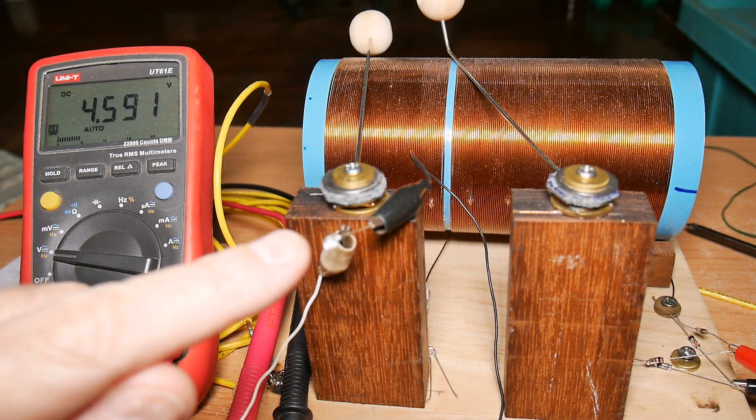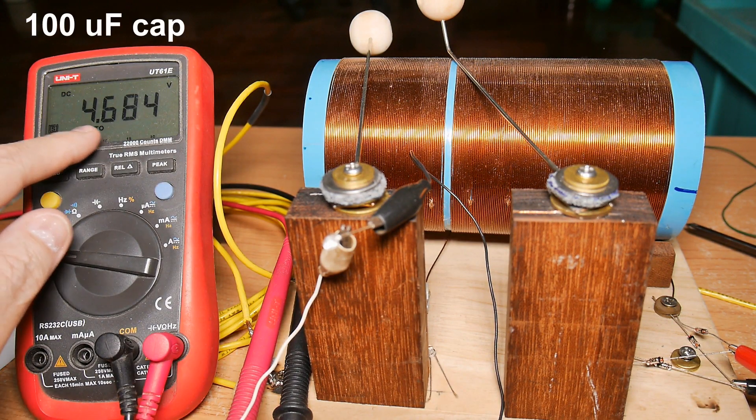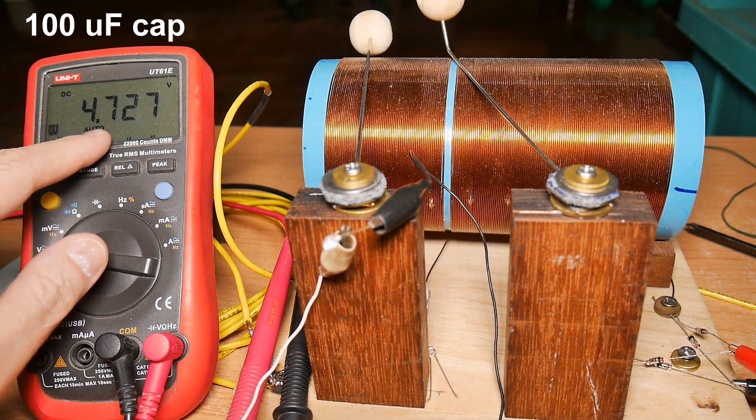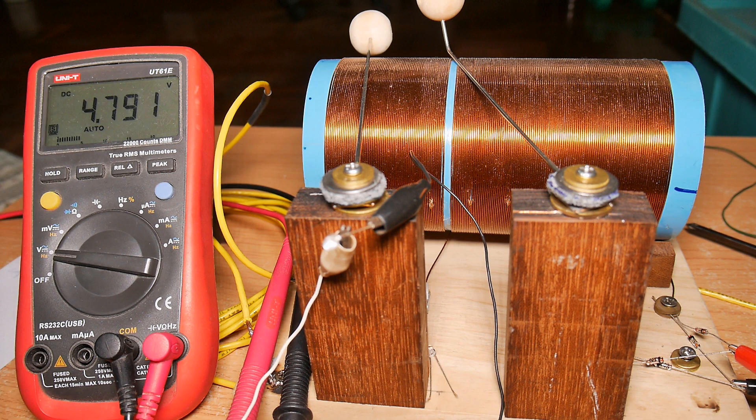With the LED disconnected and a capacitor in line, I can get 4.6, 4.7, 4.8 volts, something like that. The problem is I'm not getting any more amperage, which is, you know, let's take a look at that.